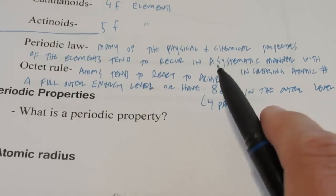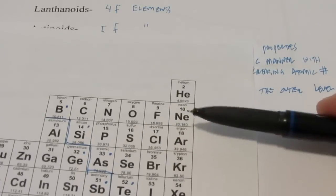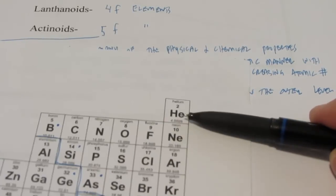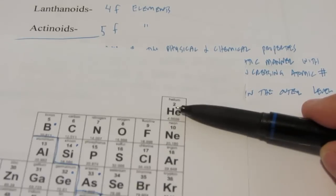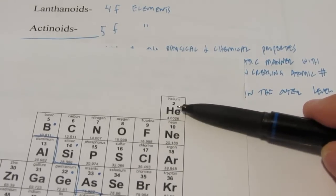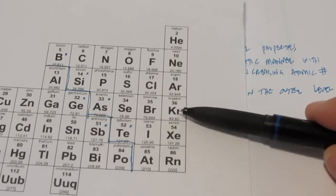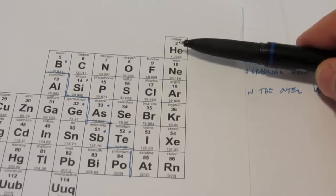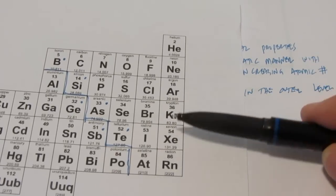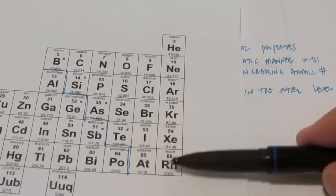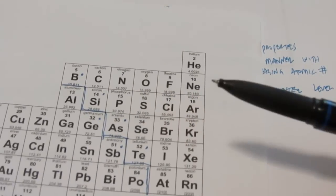We know that the noble gases are all considered stable because they have full octets — with the exception of helium, which can't have an octet because it only has two electrons, but it does have a full outer energy level. Neon, argon, krypton, xenon, and radon are considered noble because they rarely react with anything at all. Only the larger noble gases can react at high temperatures with fluorine.